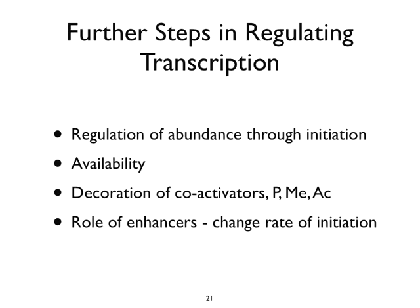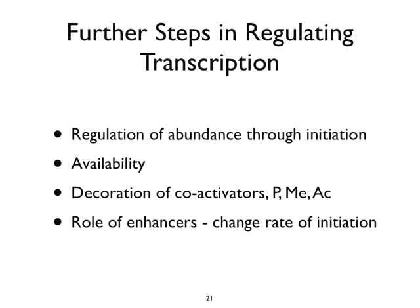There are lots of different ways of regulating transcription. One way — perhaps the most important — is to regulate abundance through initiation: the sheer amount of a specific RNA that accumulates. You can regulate transcription by the availability of the template — some parts of a DNA template are available at all times, others are not, occluded by host proteins or structural elements. Sometimes the coactivators are decorated with additional moieties: phosphorylation events, methylation events, acetylation events, or ADP-ribosylation. The role of enhancers can change the rate of initiation.